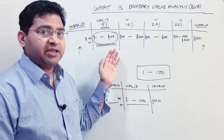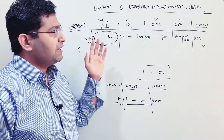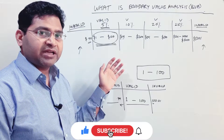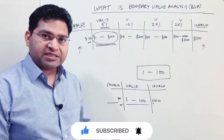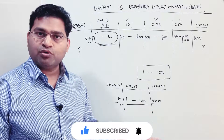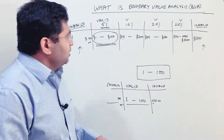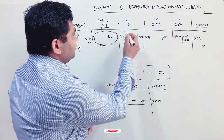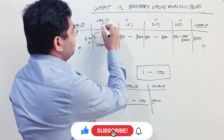I'll continue with the same example that I explained in the last tutorial and show you how you can apply equivalence partitioning and boundary value analysis together to come up with the best test cases to get maximum coverage for the component that you are going to test. This is the discount example that we used in the last tutorial.